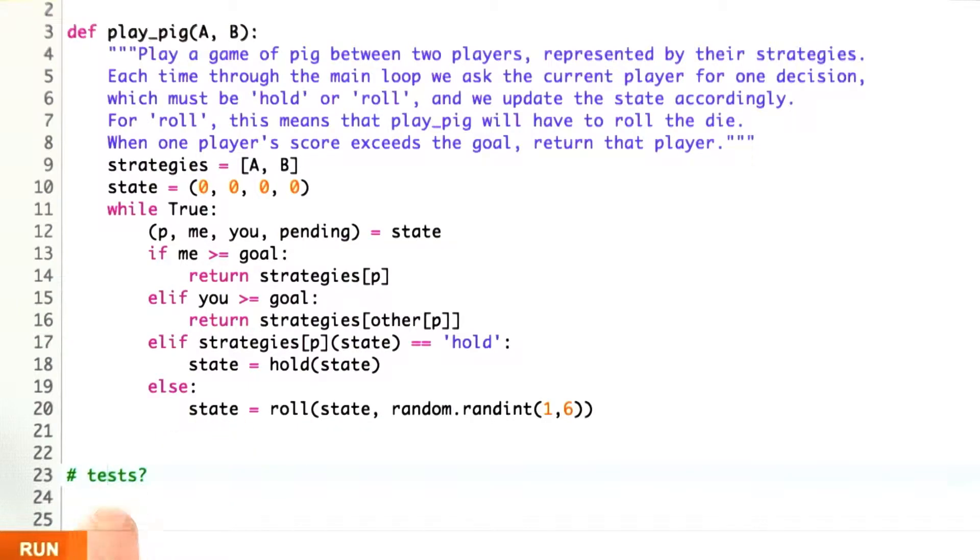Now, the question is: how can I test a function like this that includes this non-deterministic component? One thing we want to be able to do is inject some deterministic numbers to say this is the sequence of die rolls I want to give you, and then from that, I can check if it's doing the right thing.